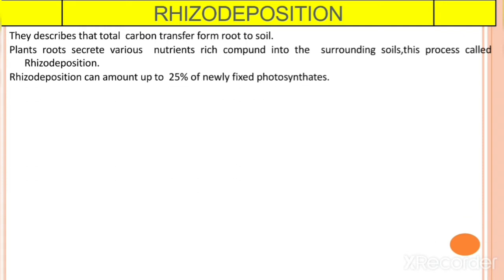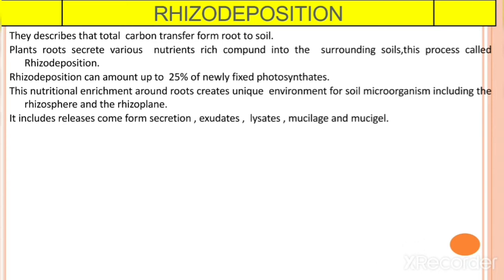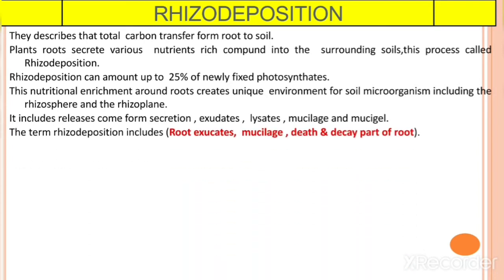Rhizodeposition can amount up to 25% of newly fixed photosynthates. The nutritional enrichment around roots creates a unique environment for soil microorganisms, including the Rhizosphere and Rhizoplane. It includes secretions, exudates, lysates, mucilage, and mucigel.